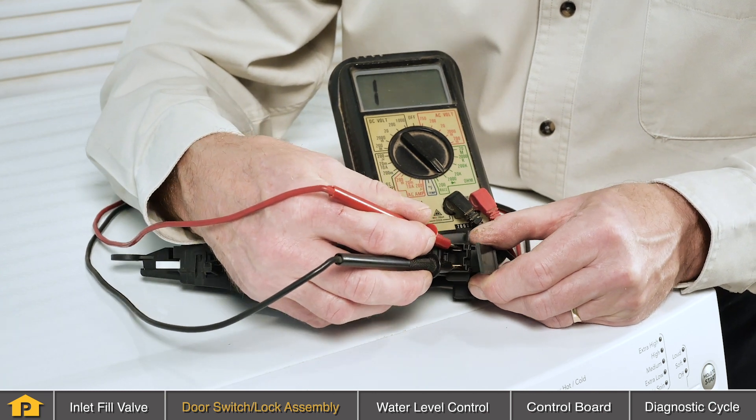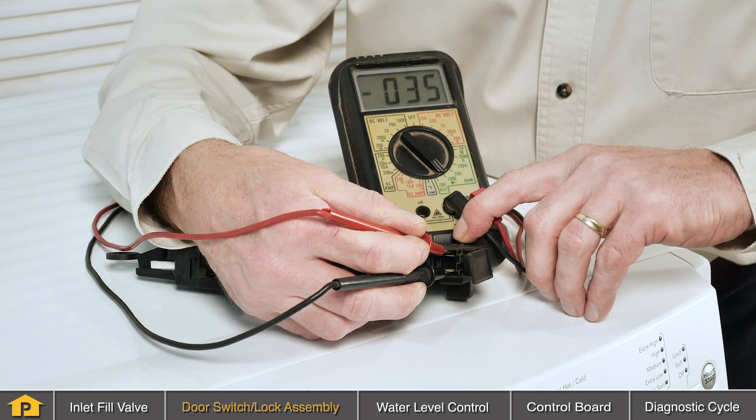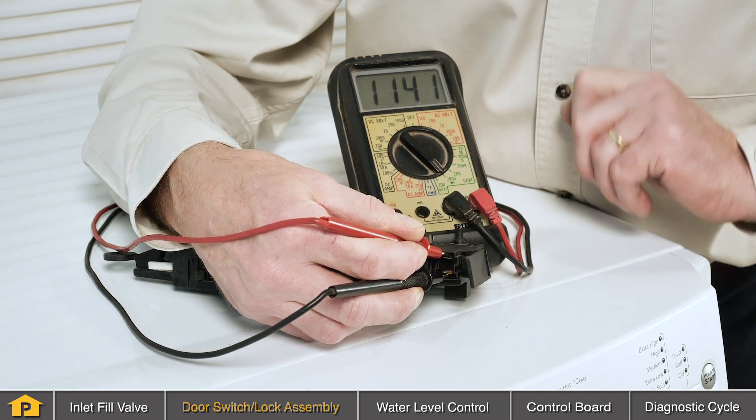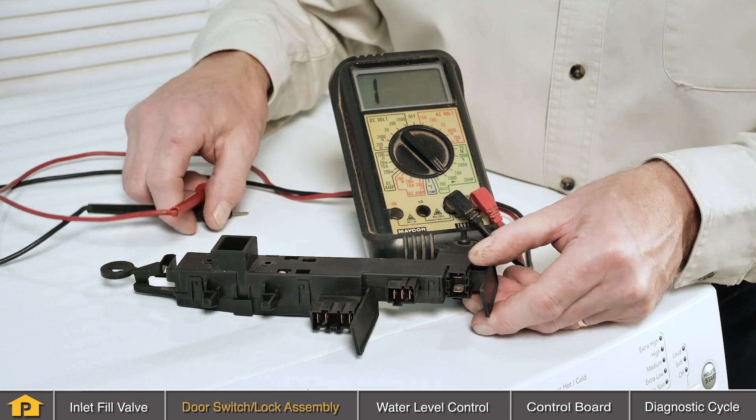You can test that door switch assembly using a multimeter. Simply locate the individual door switch itself and the particular contacts that are associated with that and you can check that using your multimeter.